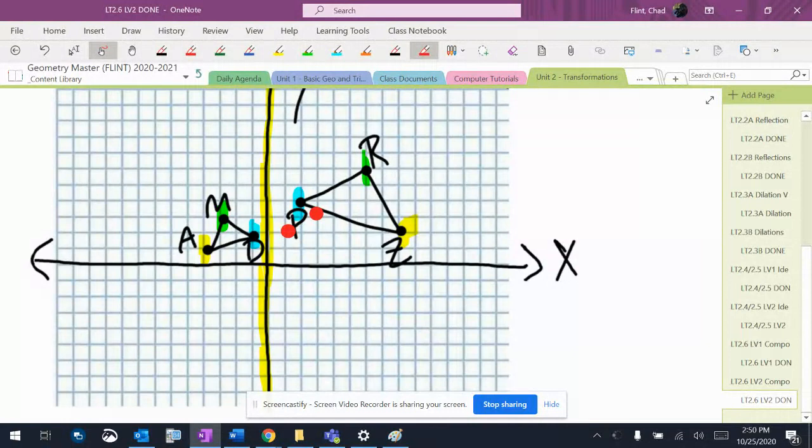Z is gonna end up 1, 2, 3, 4, 1, 2, 3, 4. Right there. So then this is A, and this is M, and this is P.